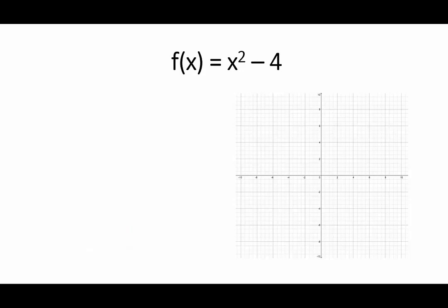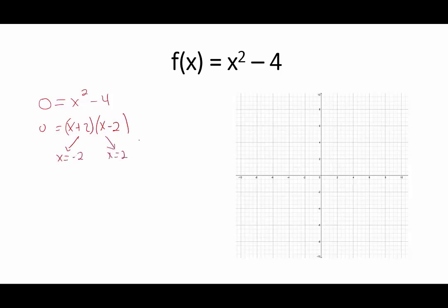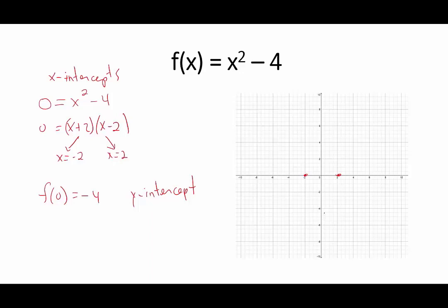Let us look at one example. Setting the quadratic function equal to 0, we can find the x-intercepts: x²−4=0 gives (x+2)(x−2)=0, so x=−2 or x=2. Evaluating at 0 gives the y-intercept — there is only one, otherwise we would violate the definition of a function. Since this is a quadratic function, the graph is a parabola that opens upward.